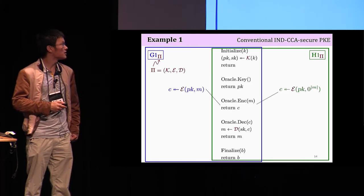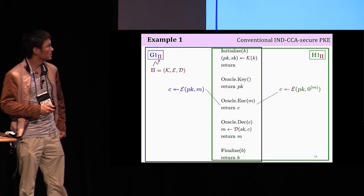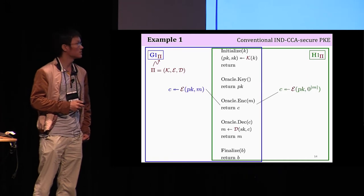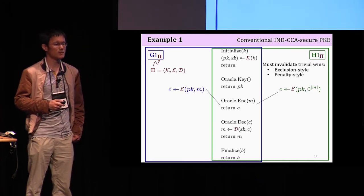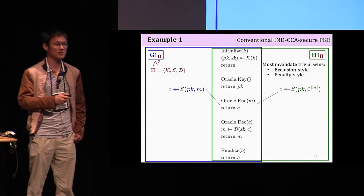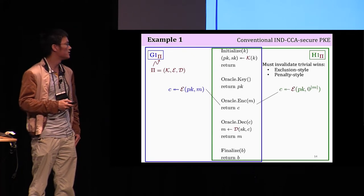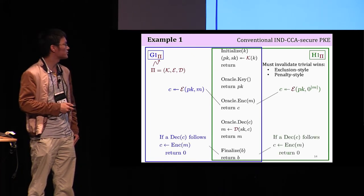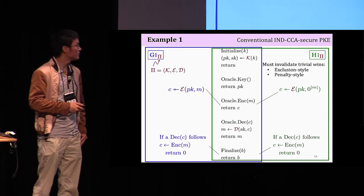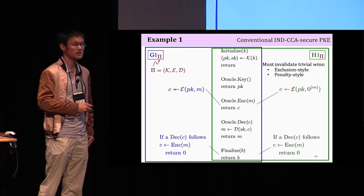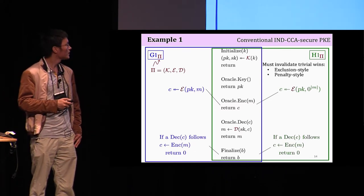So that by correctness in the real world, he would see the original message M, but in the ideal side, he would see the all zero-bit message. Traditionally, there are multiple ways to exclude such trivial wins. You can either exclude from consideration all adversaries that make such trivial queries, or you can first allow such trivial queries, but in the finalized procedure, you penalize that behavior by returning zero. Valerie Hoffman's and Kiltz called the first one exclusion style, the second one penalty style.